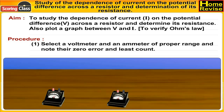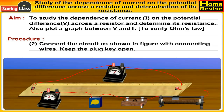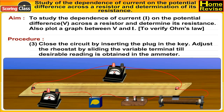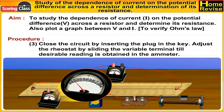Procedure: Select a voltmeter and ammeter of proper range and note their zero error and least count. Connect the circuit as shown in the figure with connecting wires. Keep the plug key open. Close the circuit by inserting the plug in the key. Adjust the rheostat by sliding the variable terminal till a desirable reading is obtained in the ammeter.